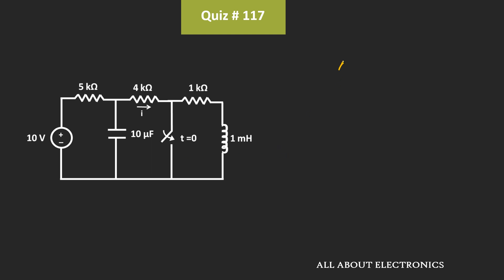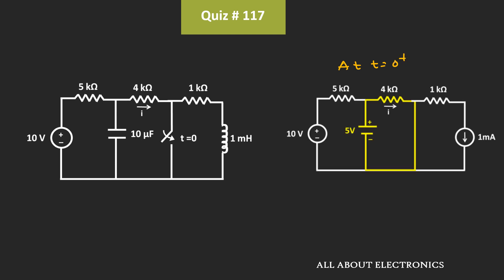At time t is equal to zero plus, if we see the equivalent circuit, then it will look like this. That means at time t is equal to zero plus, this capacitor will act as a voltage source of 5V, while this inductor will act as a current source of 1mA. So here, we need to find the current through this 4kΩ resistor. For that, we can apply KVL in this particular loop. That means this current I is equal to 5V divided by 4kΩ, which is equal to 1.25mA.